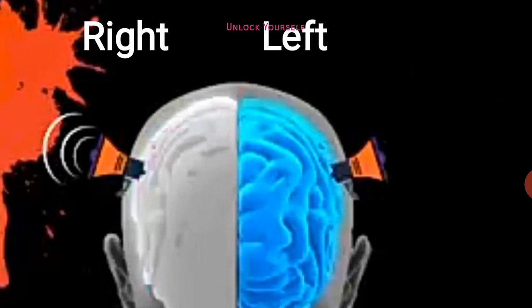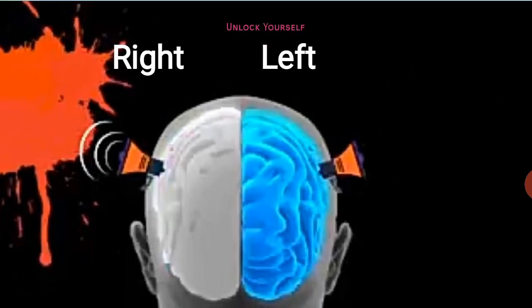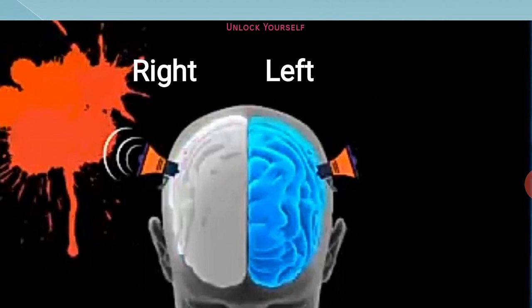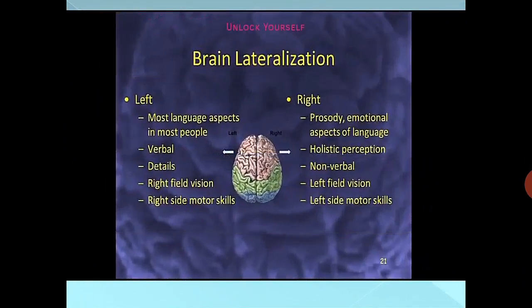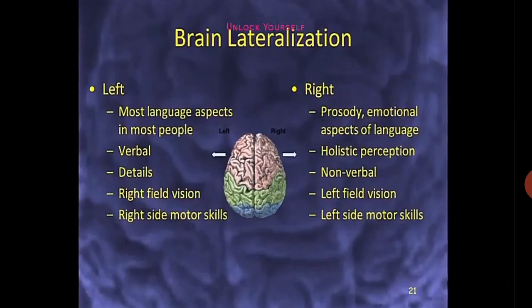The left side of the brain controls muscles on the right side of the body and receives sensory information from the right side of the body. Both hemispheres are connected to each other by a band of fibers called the corpus callosum. Together they are able to analyze sensory data, perform memory and sensory functions, learn new information, form thoughts, and make decisions. As mentioned earlier, language is localized in the left hemisphere, which also controls the right field of vision.